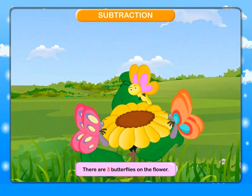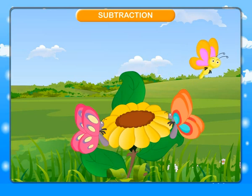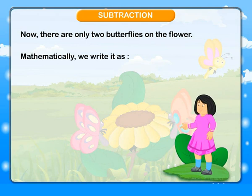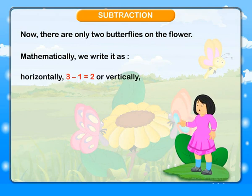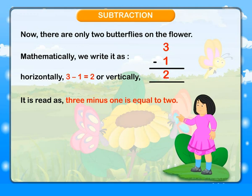Subtraction. There are three butterflies on the flower. One butterfly flew away. Now there are only two butterflies on the flower. Mathematically we write it as: horizontally, 3 minus 1 is equal to 2; or vertically, 3 minus 1 is equal to 2. Minus is the sign of subtraction.